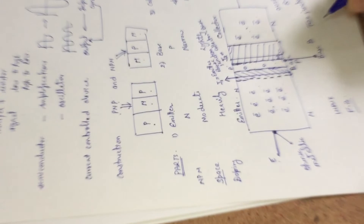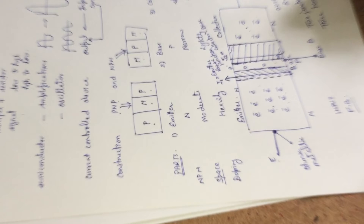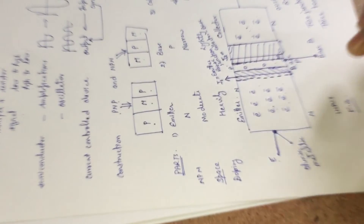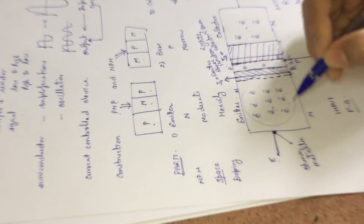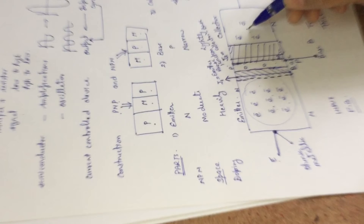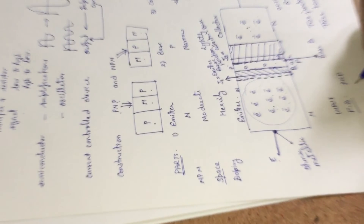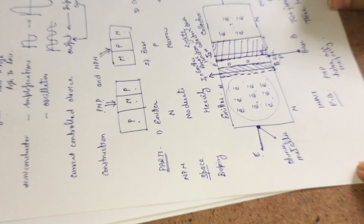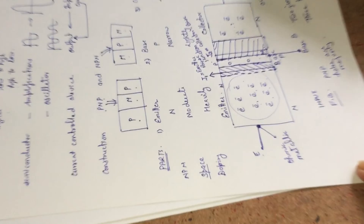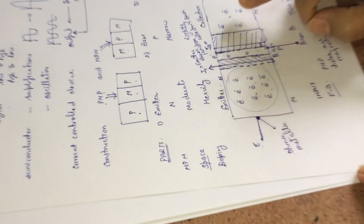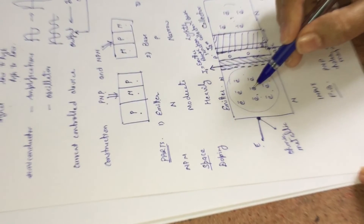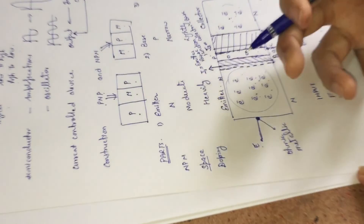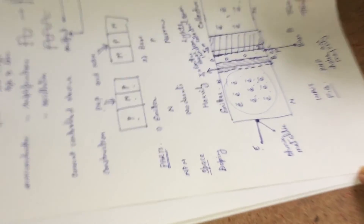There are two junctions in a transistor, whether it is NPN type or PNP type, and three terminals known as emitter, base, and collector. In an NPN transistor, electrons are the majority charge carriers, whereas in a PNP transistor, holes are the majority charge carriers. This is the main difference in the working of NPN and PNP transistors.